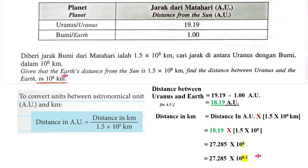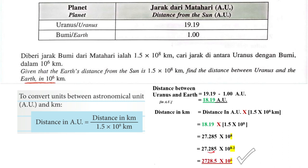In order to change the answer to 10 to the power of 6 km, 8 minus 2. So the final answer is 2728.5 x 10 to the power of 6 km.